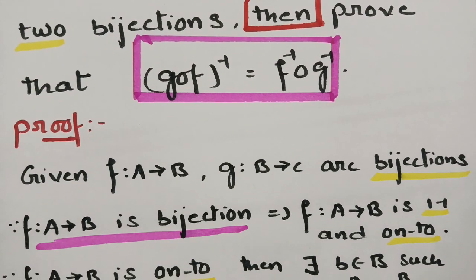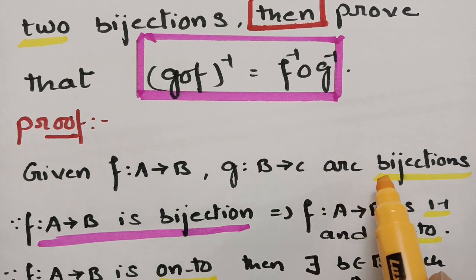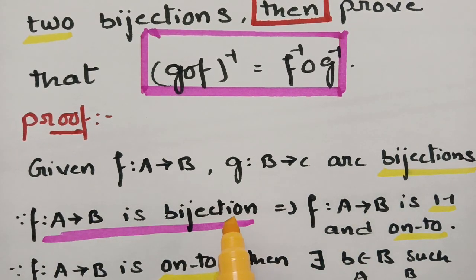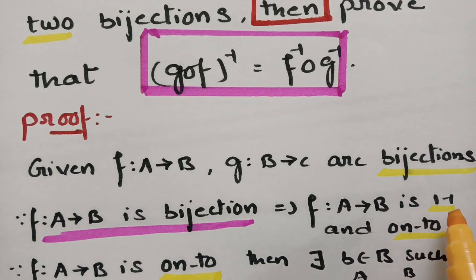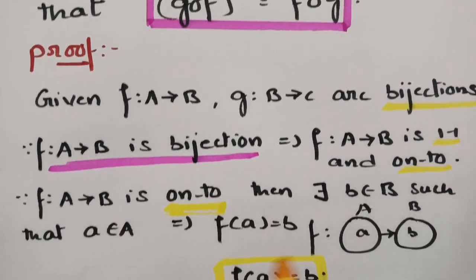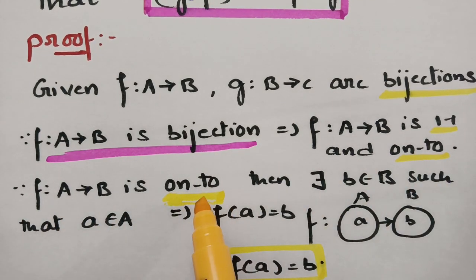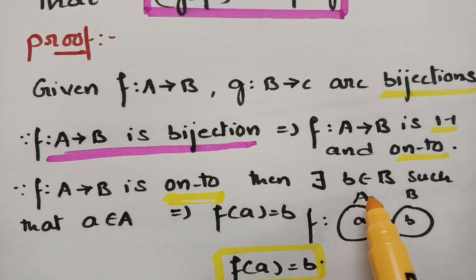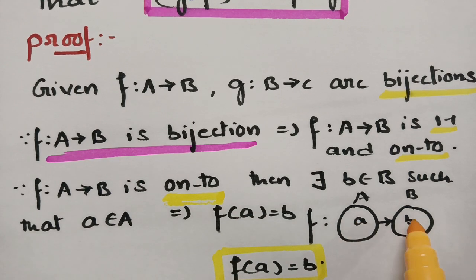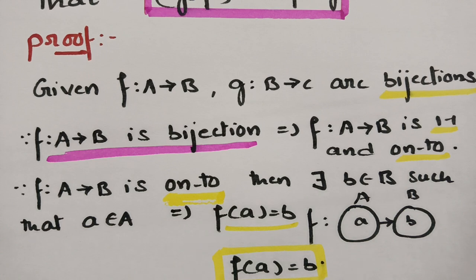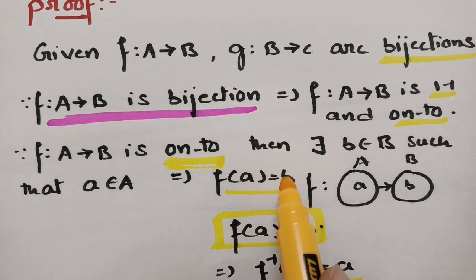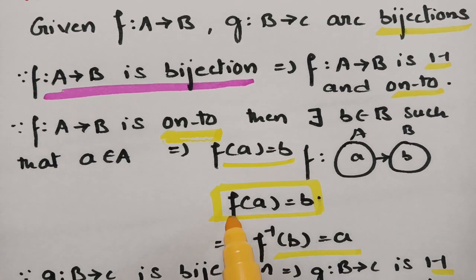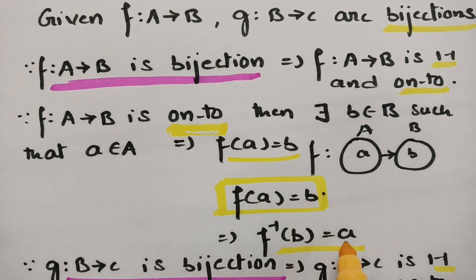Now let's start the proof. F maps from A to B is a bijection. Bijection means two properties — one-one and onto. Taking the onto property: F maps from A to B is onto, so there exists small b in set B and small a in set A such that F of a equals b. Sending F to the other side gives F inverse of b equals a. Keep this aside.